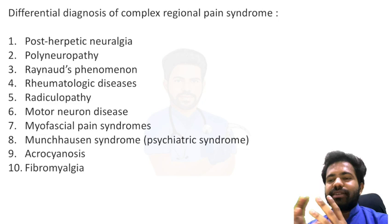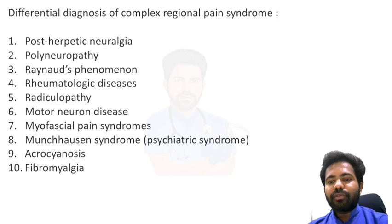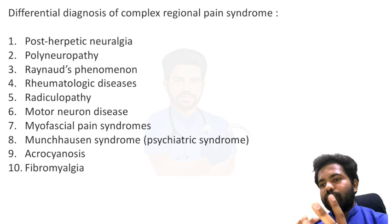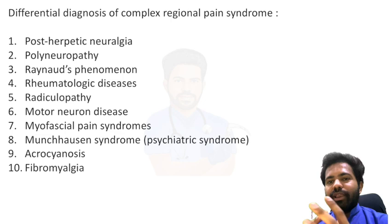Differential diagnoses for CRPS include post-herpetic neuralgia, polyneuropathy, Raynaud's phenomenon, rheumatological diseases, radiculopathy, motor neuron diseases, myofascial pain syndromes, Munchausen syndrome, acrocyanosis, and fibromyalgia — all of which can present with similar features.